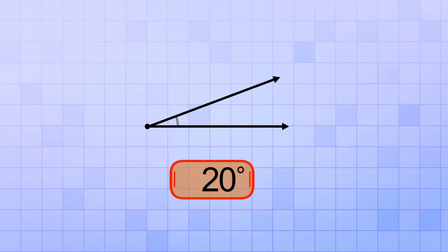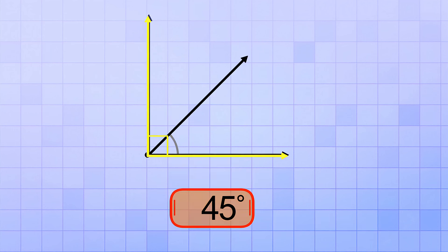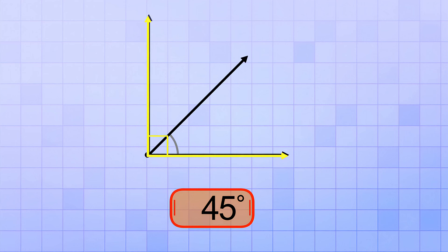Alright, that's 15 degrees, 20, 25, 30, 35, 40, and 45. Now 45 degrees is a special angle because it's exactly half of a right angle. If we draw a right angle in the same spot, you can see that our ray cuts it into two equal parts.